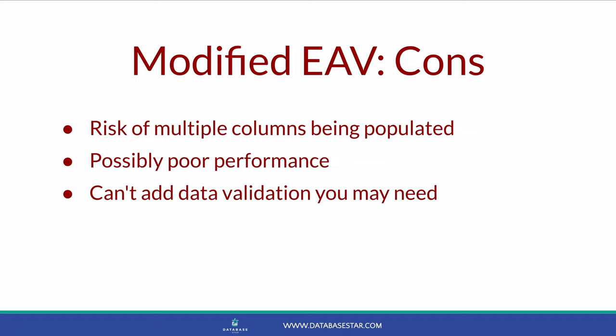If a row has both a string value and a number value populated, which one should be used? You can add logic in the application to prevent this, but it's still a small risk. Another disadvantage is poor performance — this design doesn't really solve the performance issues of the EAV design. Performance may be slightly better since indexes could work better on columns with specific data types, but it's still not ideal. You'll still need to write subqueries that can be complex. You also can't add the fine-grained data validation you want — for example, you can't specify that certain types of dates have a certain range. So while this is an improvement over EAV, it's also one I would avoid unless it's a last resort.